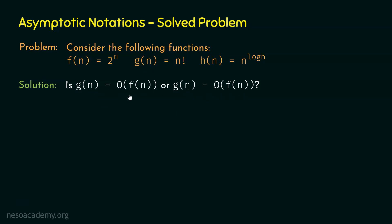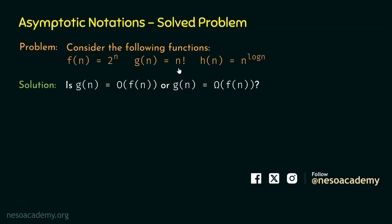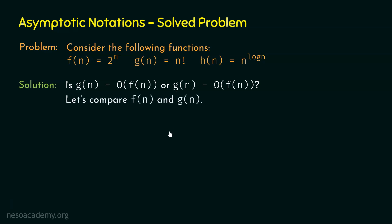The key question now is whether gn is O(fn) or gn = Ω(fn) — that is, is fn asymptotically bigger or smaller than gn? Let's compare fn = 2 power n and gn = n factorial. Both are exponential-class functions, and comparing them directly is not straightforward, so let's substitute some values of n.